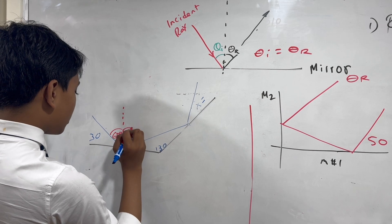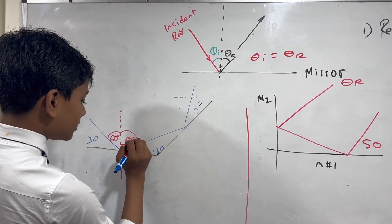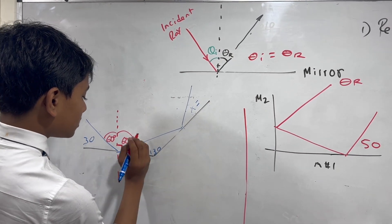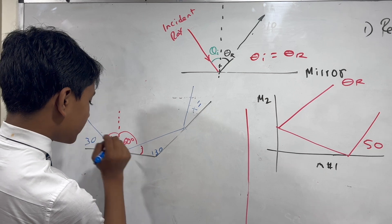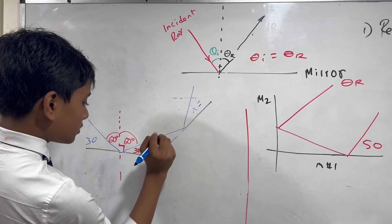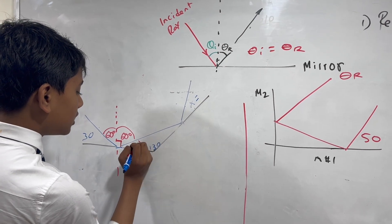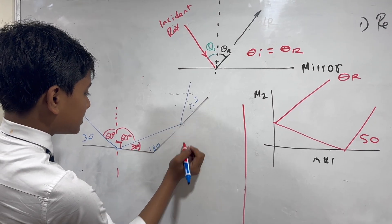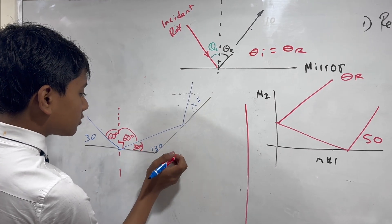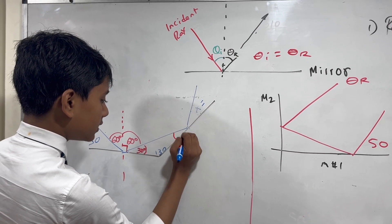Theta I equals theta R, so what's reflected on the other side is also 60 degrees. Now 60 plus this must equal 90 degrees, so this angle is 30 degrees. The total sum of angles must be 180 degrees, so 30 plus 130 plus X equals 180. That means X is 20 degrees.